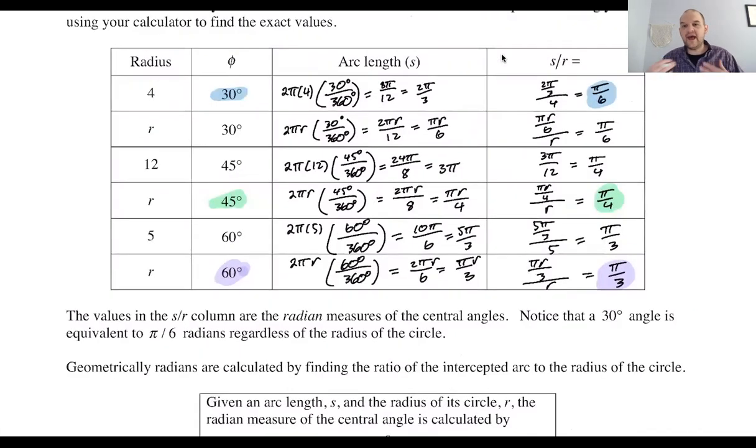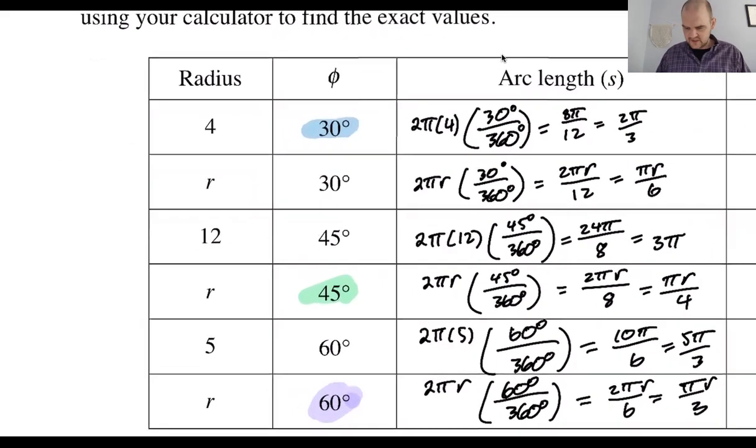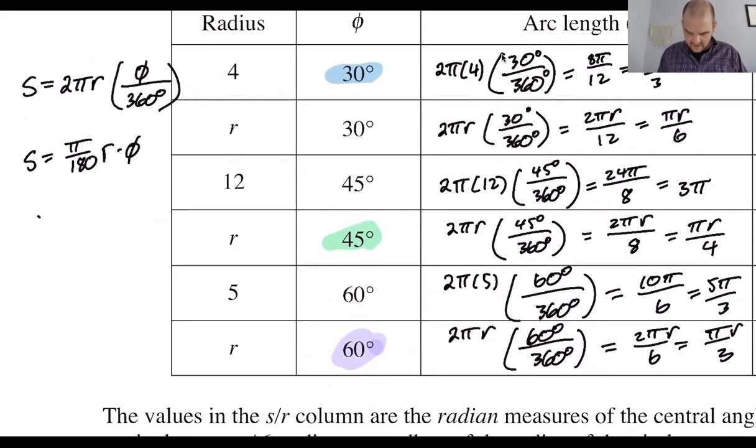So it looks like we have something kind of happening all the time. So our arc length in general, our S, seems to be 2πr times phi in degrees divided by 360. So this became, we can simplify it, right? We get π over 180, and then r, and then phi. And then what we did was we did S divided by r, which will be this S thing. So π over 180 r phi divided by r. So S over r, it looks like, is π over 180 times phi. So it looks like that's the case. So then when phi was 30, we got just π over 6. When phi was 45, we got just π over 4. When phi was 60, we got π over 3.